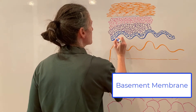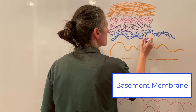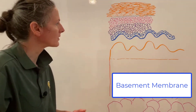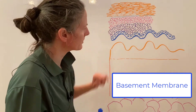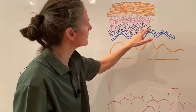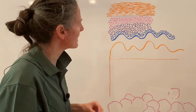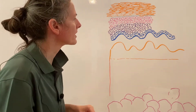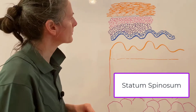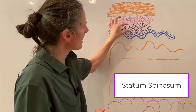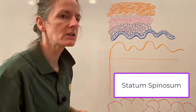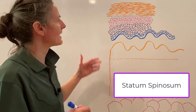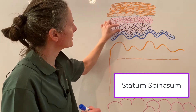The stratum germinativum sits on a basement membrane that interfaces with the dermis below, connecting the epidermis to the dermis. Dividing cells here are pushed up into the stratum spinosum. It's called the stratum spinosum because these cells begin to dehydrate, lose cytoplasm, and the cytoskeleton starts to stick out, giving them a spiny appearance.